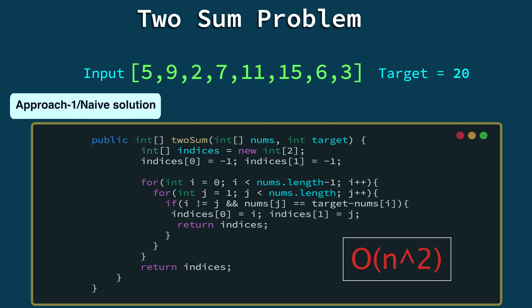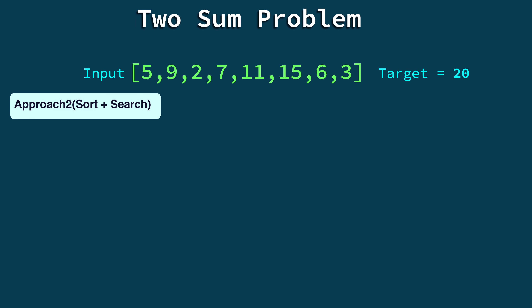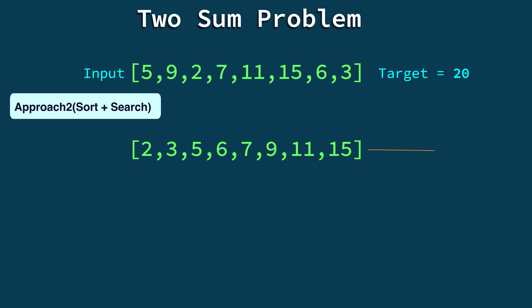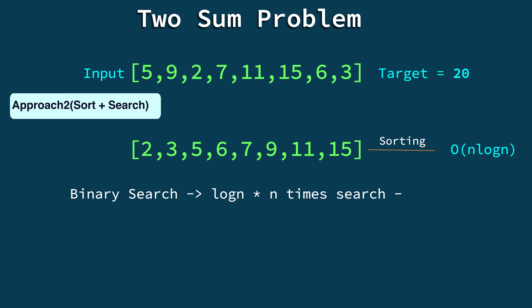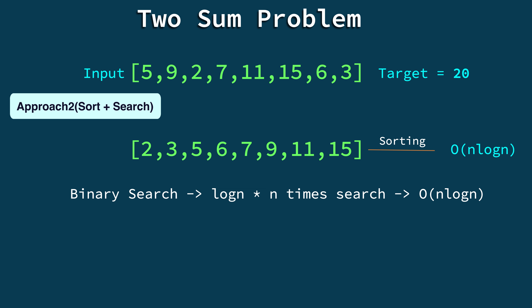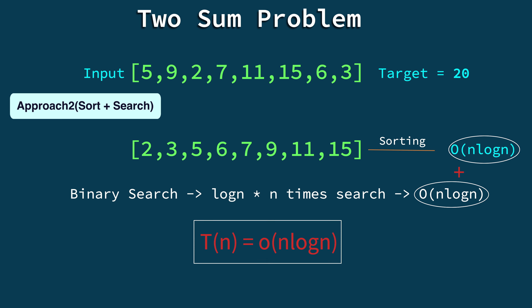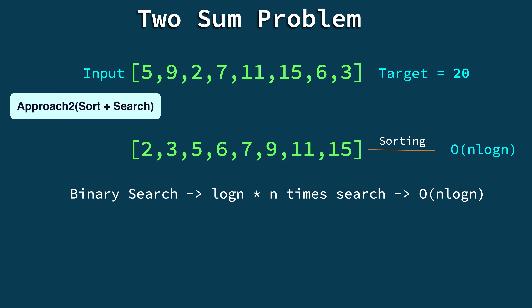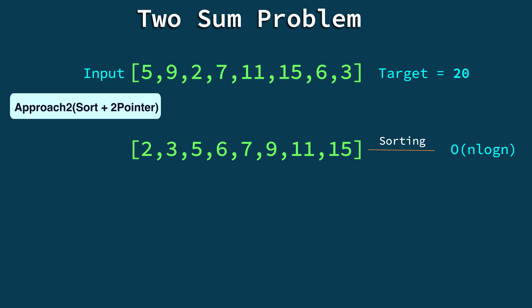To get rid of the O(n²) polynomial time complexity, we need to remove the nested loops. We can sort the array first using any sorting algorithm, which typically takes O(n log n). Once sorted, we search for the pair that sums to the target using binary search or a two-pointer technique. Since sorting and searching are performed separately — not nested — the overall time complexity is O(n log n) plus O(n log n), which is still O(n log n), but better than O(n²).